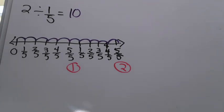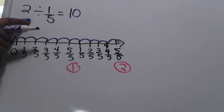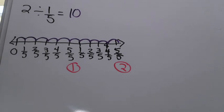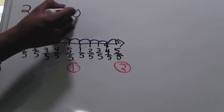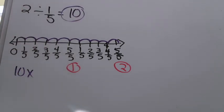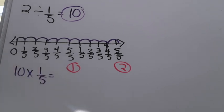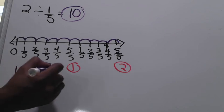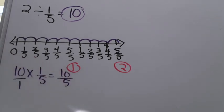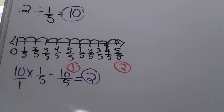To check that I've made my number line correctly, I use the inverse operation of division, which is multiplication. I multiply my quotient, ten, by the fractional part of the problem, one-fifth. I write ten over one and multiply across: ten times one is ten, one times five is five. That's an improper fraction, so I divide the numerator by the denominator: ten divided by five is two. This matches my original whole number, confirming my number line and answer are correct.